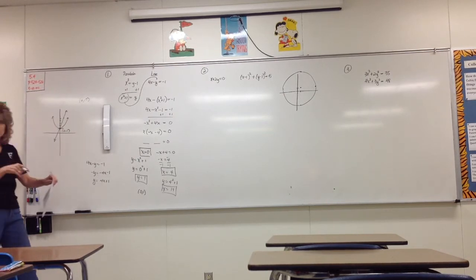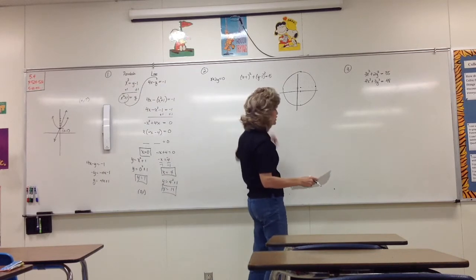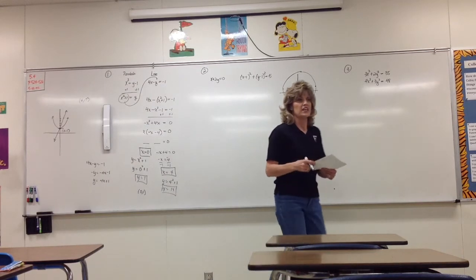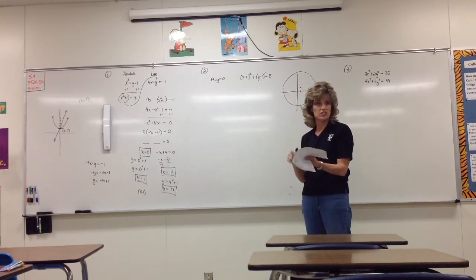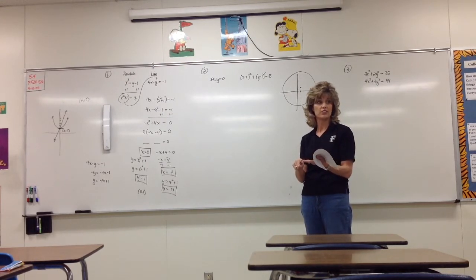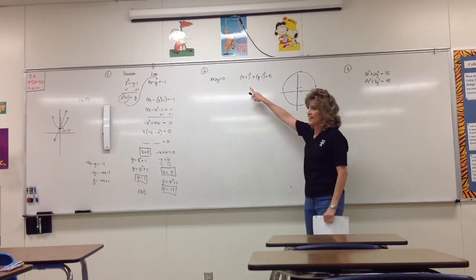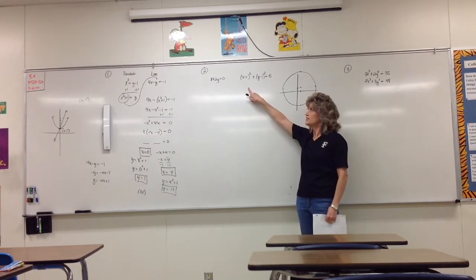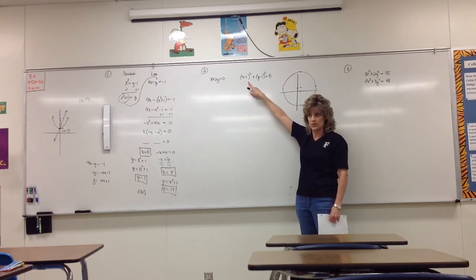Example two — let's look at that one. This one also says solve using substitution. Back before Christmas, we talked about circles, and a circle has equation x squared plus y squared equals r squared when its center is at the origin.